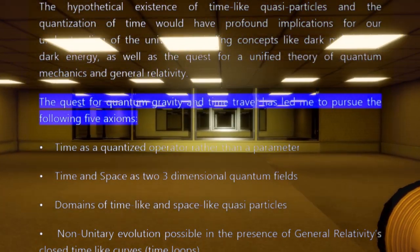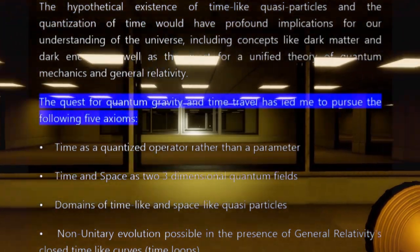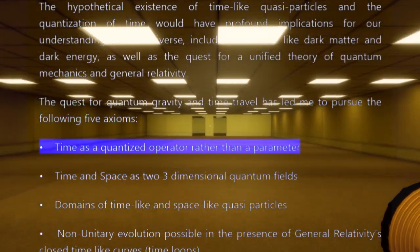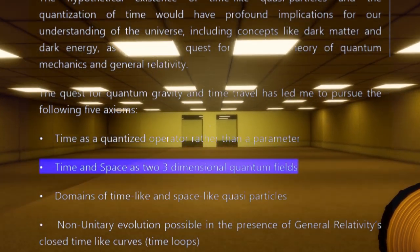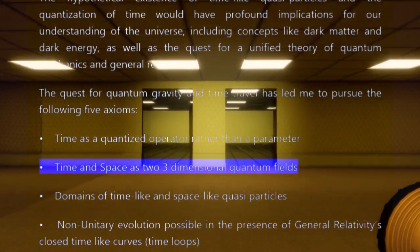The quest for quantum gravity and time travel has led me to pursue the following five axioms: Time as a quantized operator rather than a parameter; Time and space as two three-dimensional quantum fields.